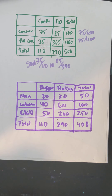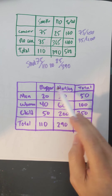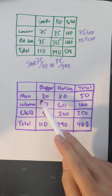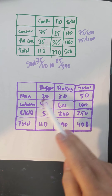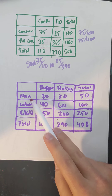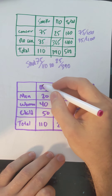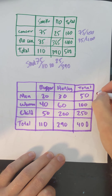Let's talk about a different situation — let's think about whether some of these are independent. This is a local eatery; we kept track of burgers and hot dogs being sold to men, women, and children. We want to find out: is ordering a burger or a hot dog independent of gender or age? The chances that a man will order a burger — that's 20 out of a total of 50 men, which reduces to two-fifths.